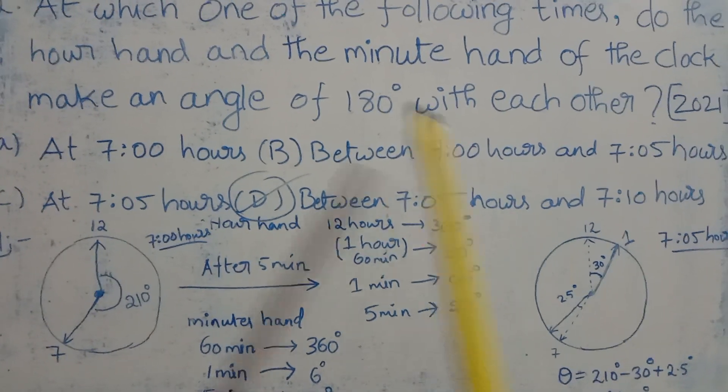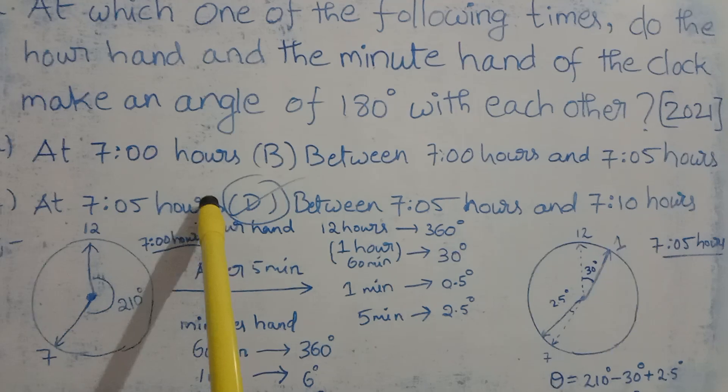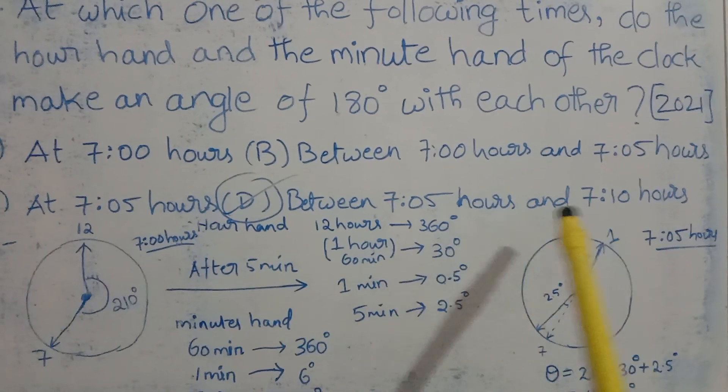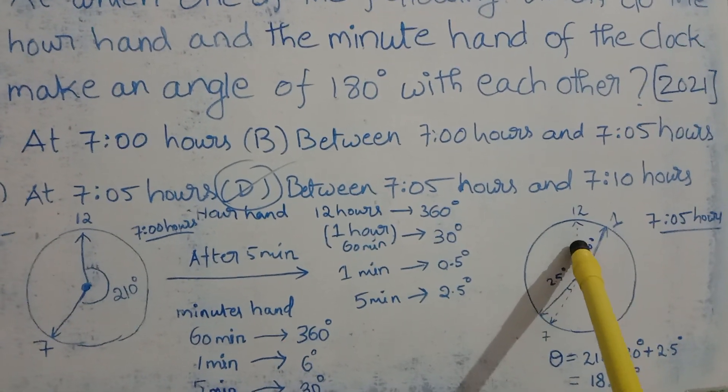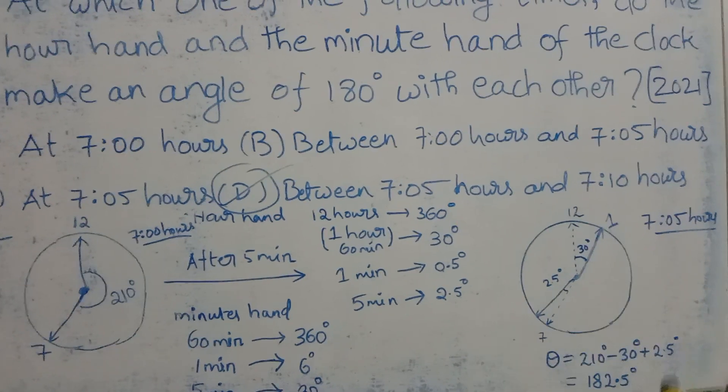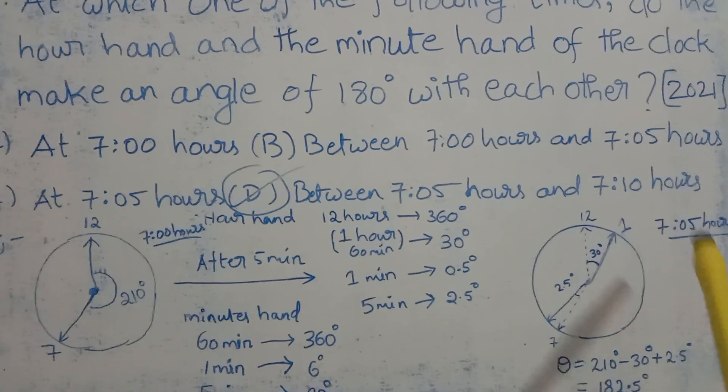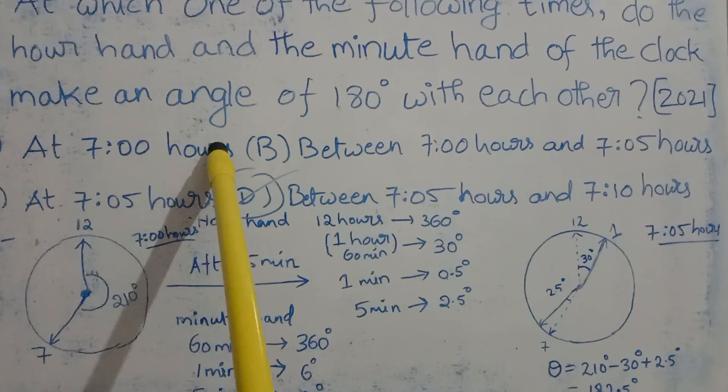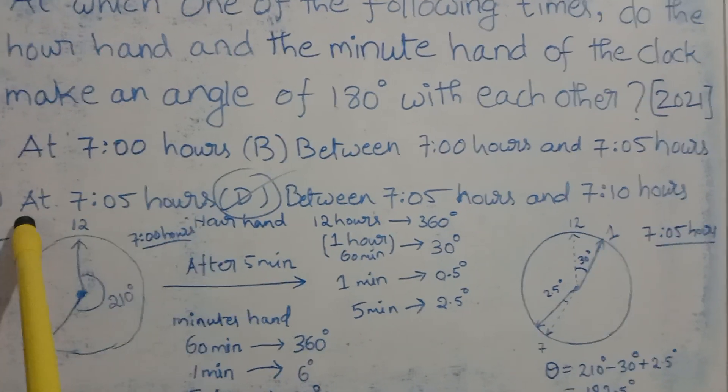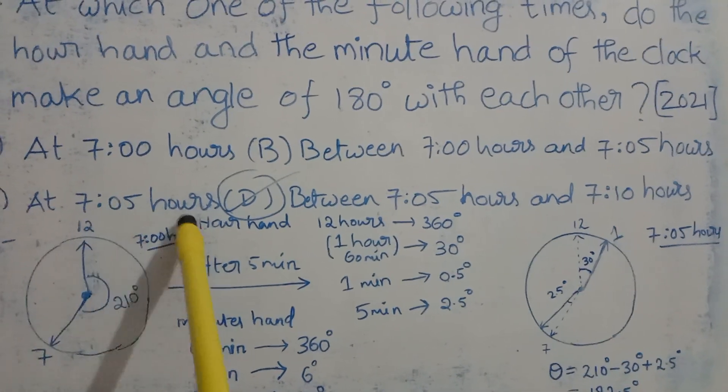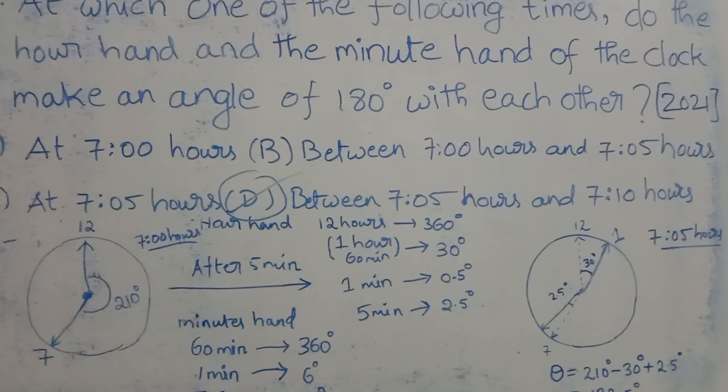At 7:05 hours the angle between the minute hand and the hour hand is 182.5 degrees. Clearly option A is not the answer, and option C at 7:05 hours is also not the answer.